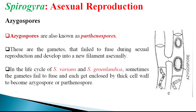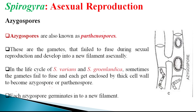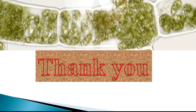Azygospores have been reported in Spirogyra varians and Spirogyra groenlandica — two well-known studied species in which azygospores are produced due to failure of gametic fusion. They are protected within a thick wall structure. After germination, they give rise to a new filament.